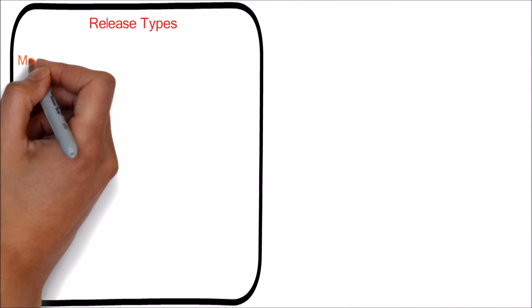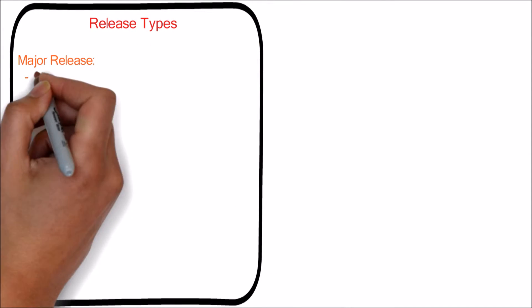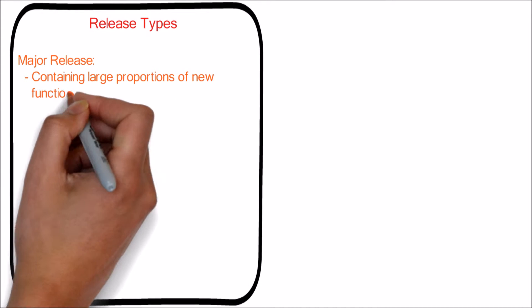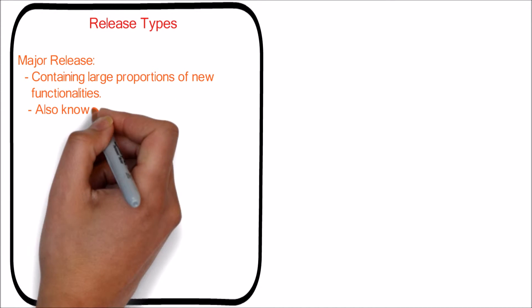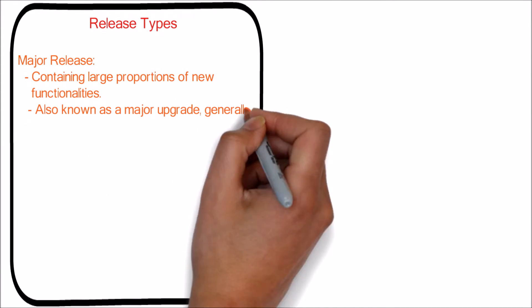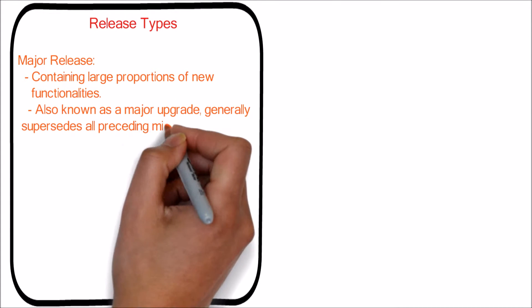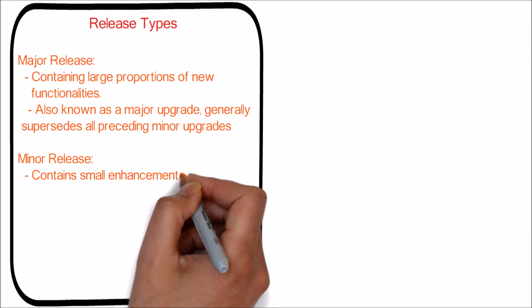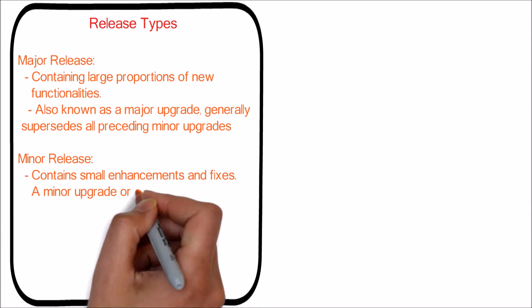Release Types: Major release — containing large proportions of new functionalities, also known as a major upgrade, and generally supersedes all preceding minor upgrades.